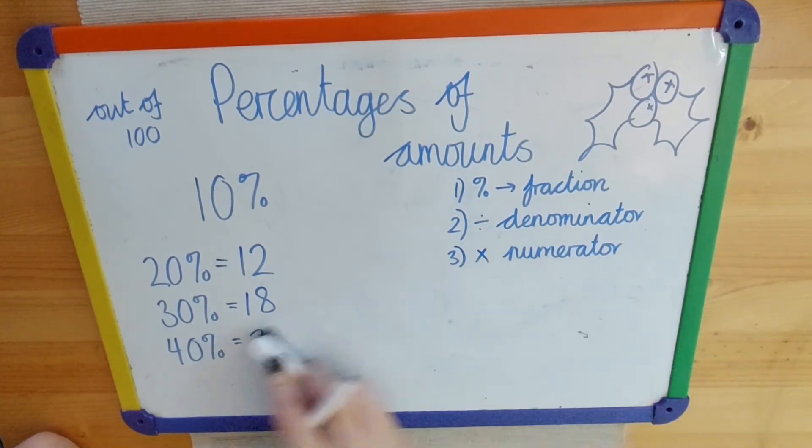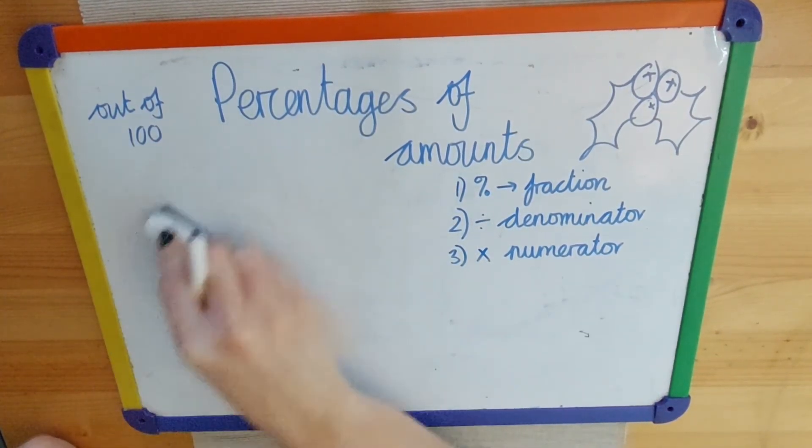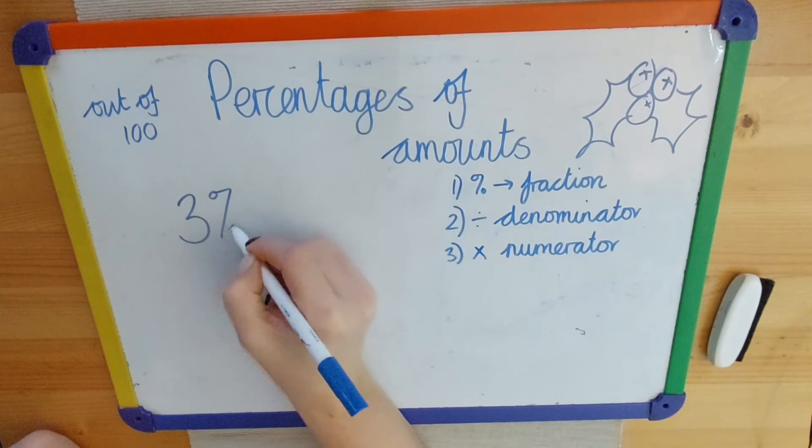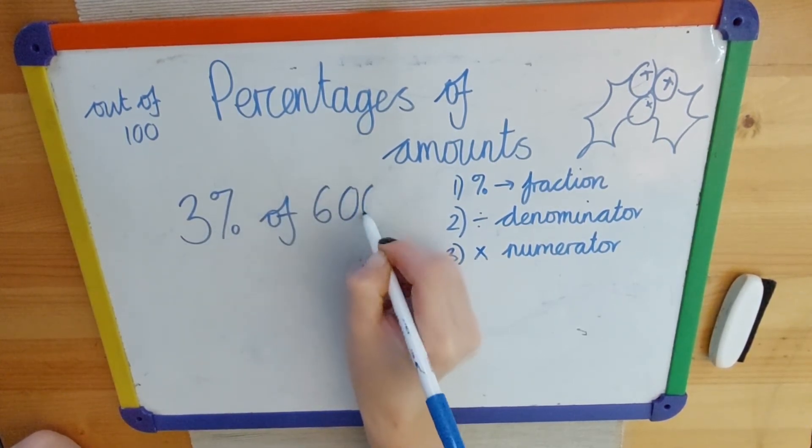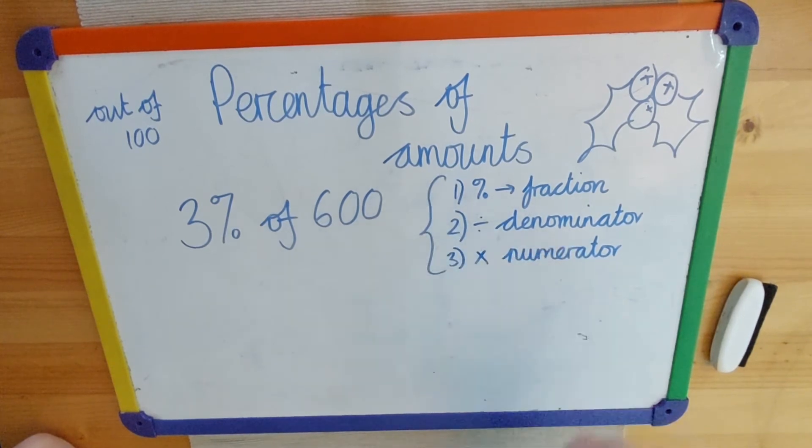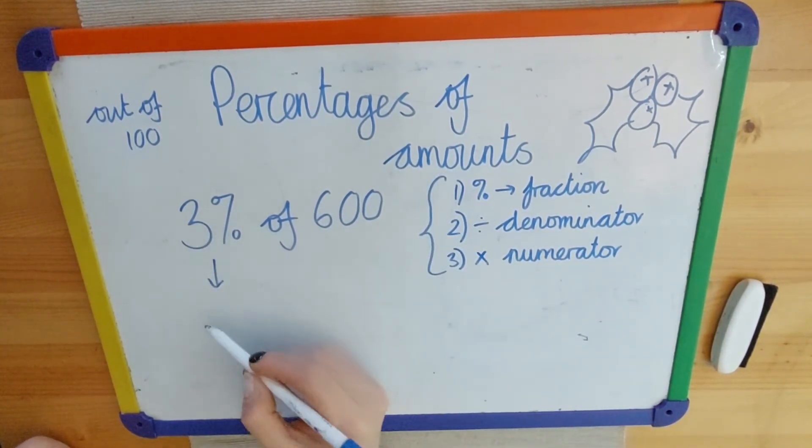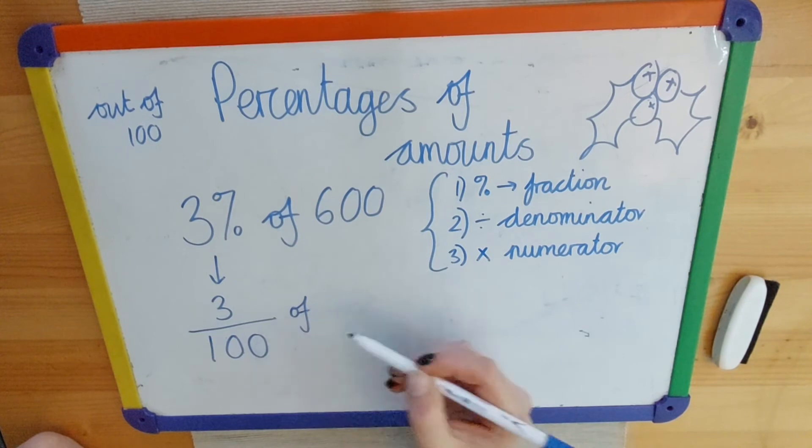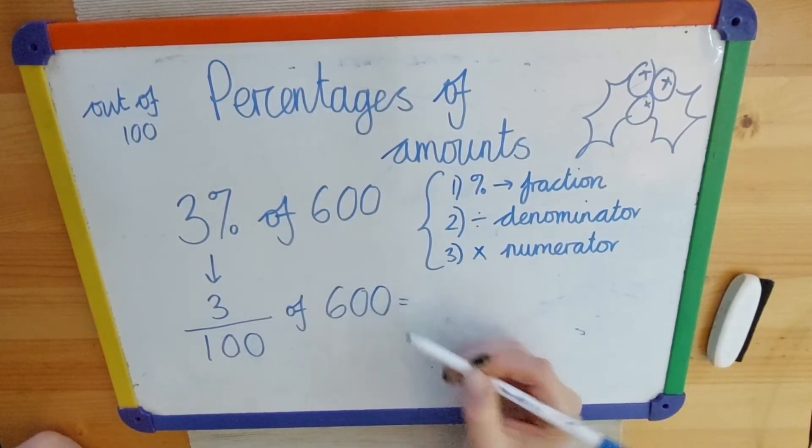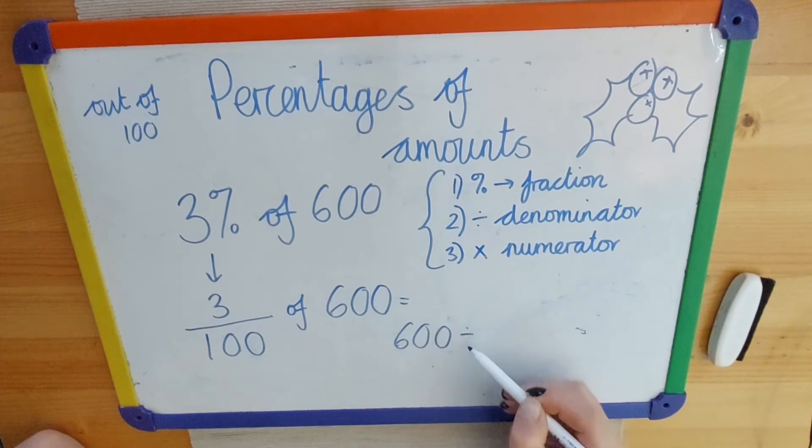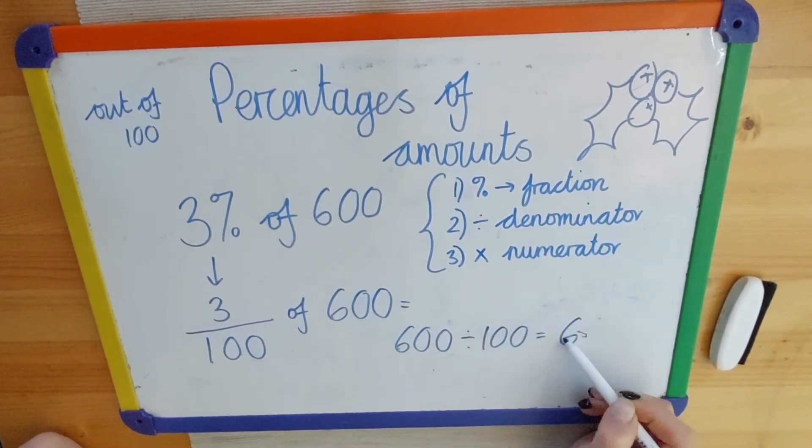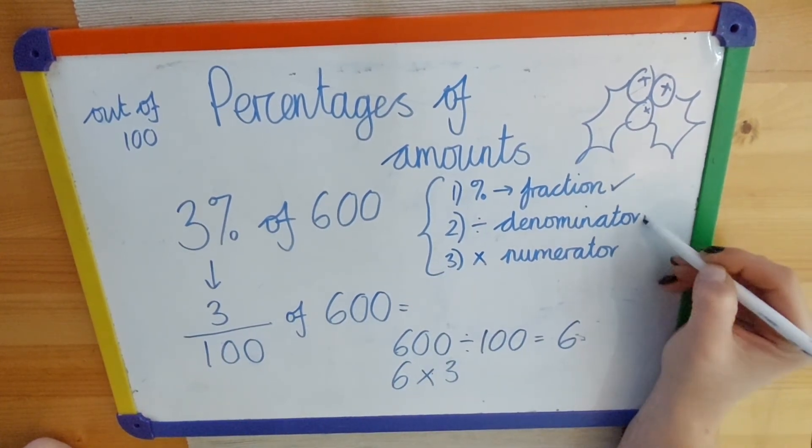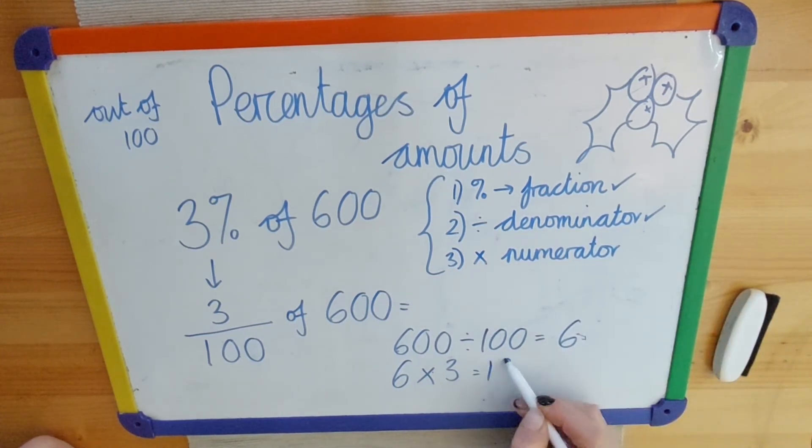Now it does get trickier. So when in the Key Stage 2 test paper, they could ask any percentage, say, for example, 3% of 600. Now, for this one, what I would say to do is follow my steps. So turn 3 into a fraction, which I know is 3 over 100, and then I need to find a fraction of that amount. So I need to do 600 divided by 100, which gives me 6, and then I would need to do 6 multiplied by 3, so times by my numerator. So I turned it into a fraction, divided by the denominator, then I need to multiply by the numerator, which is 18.